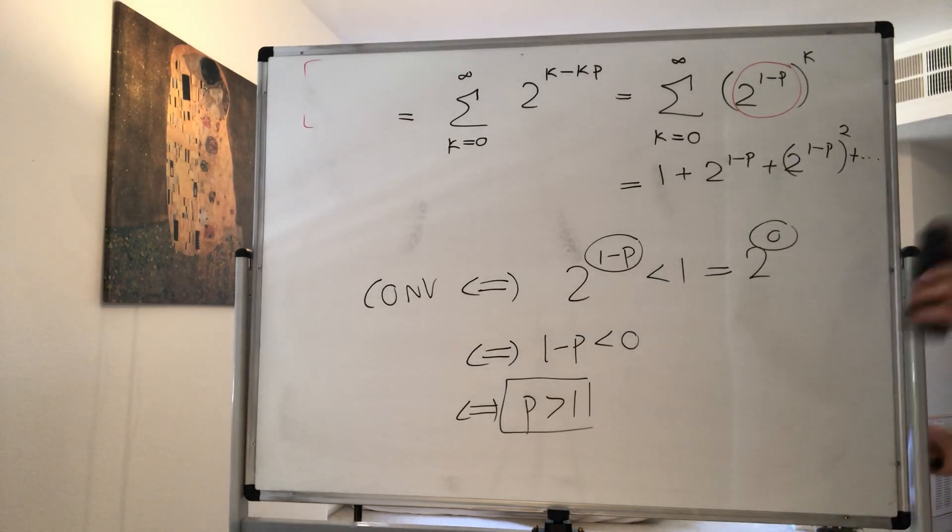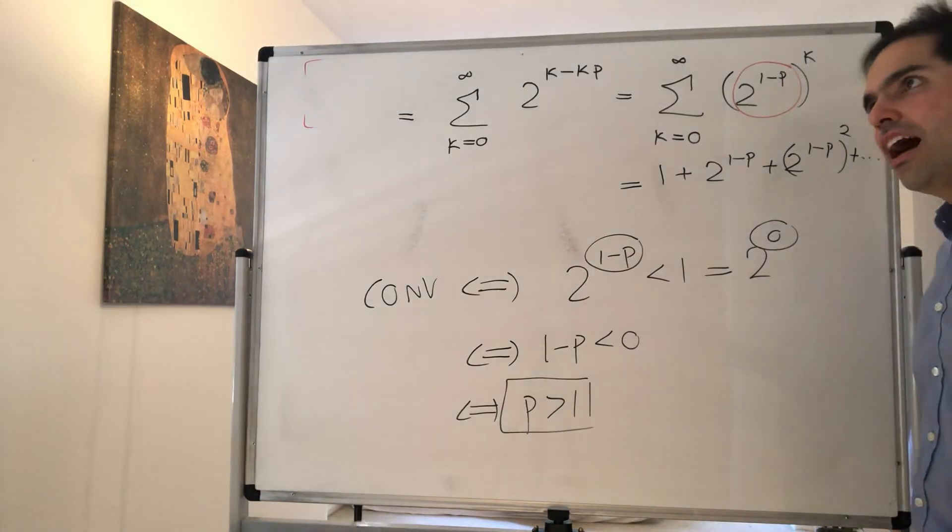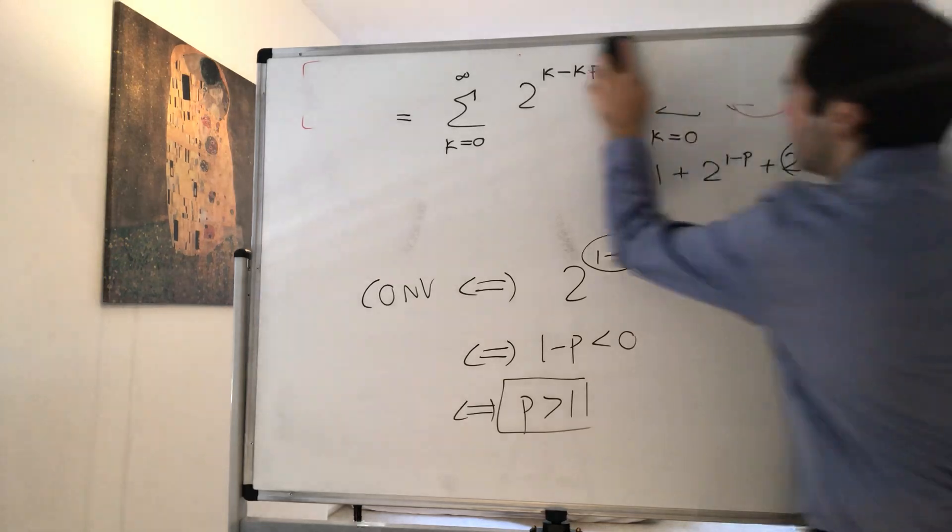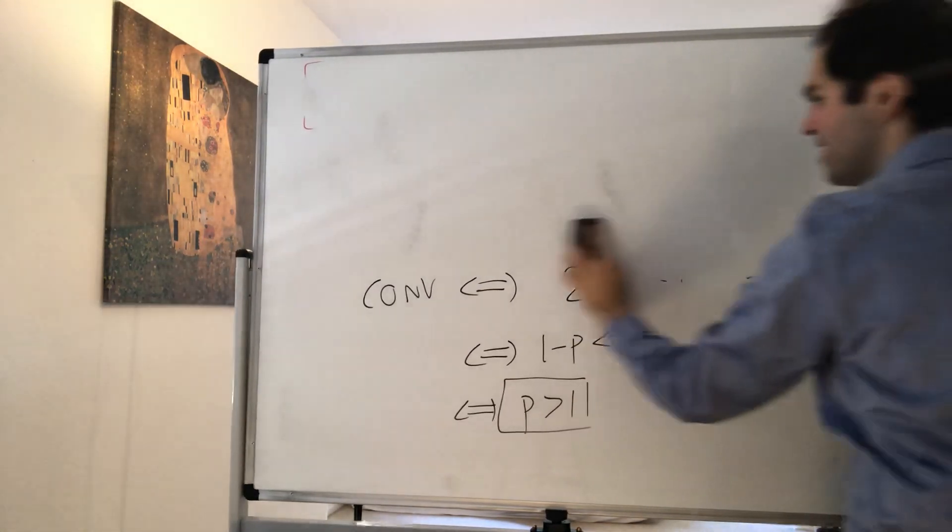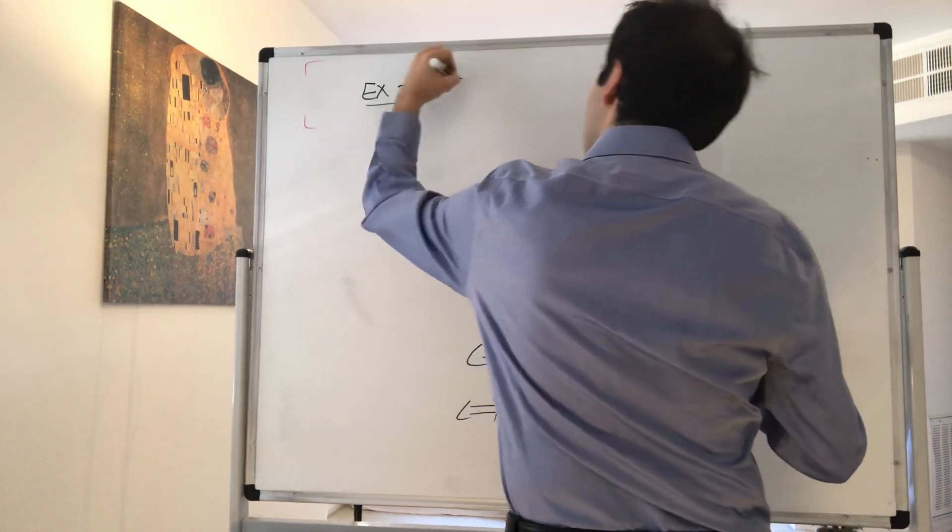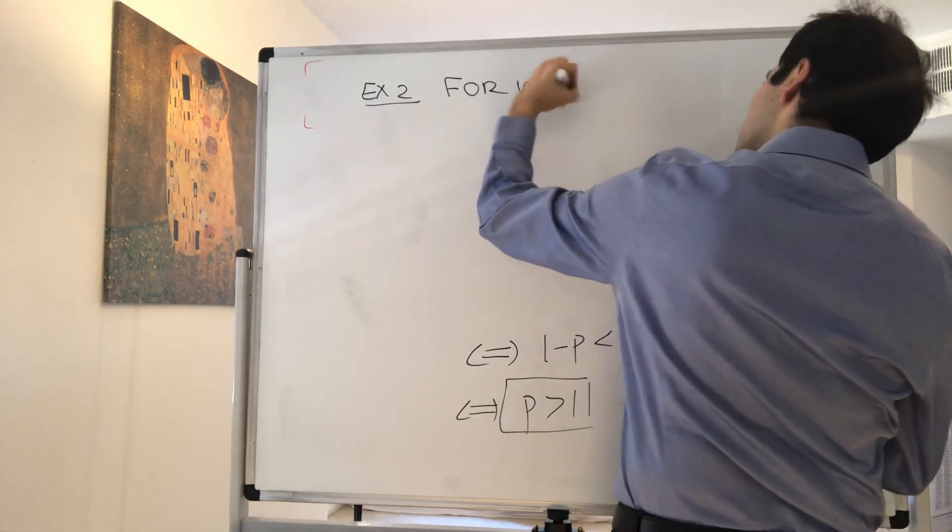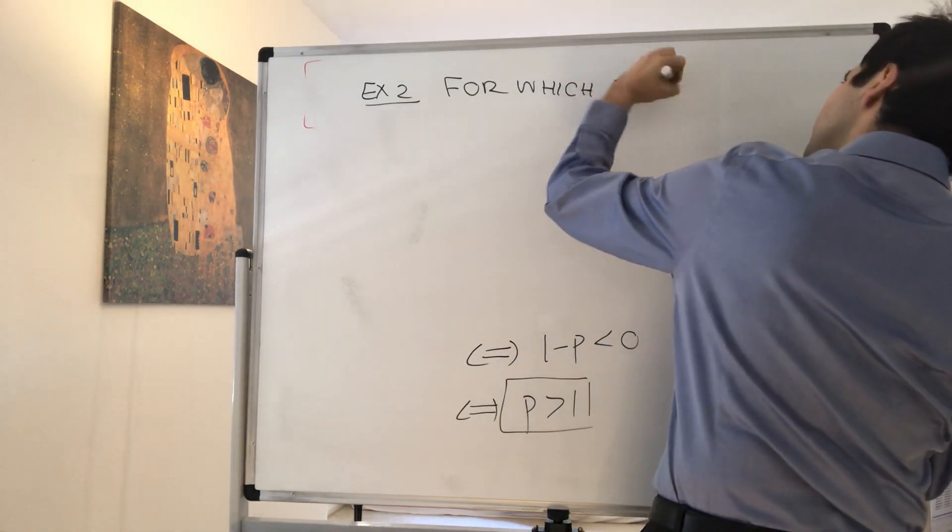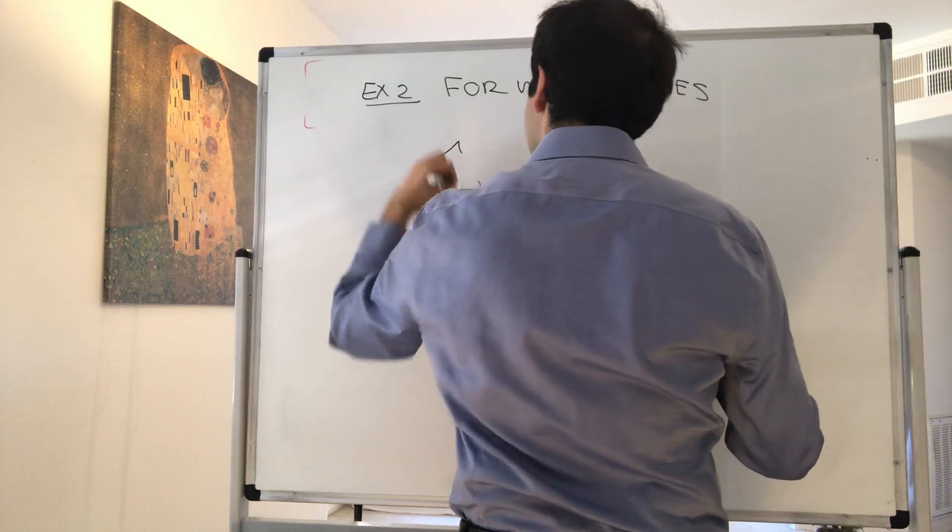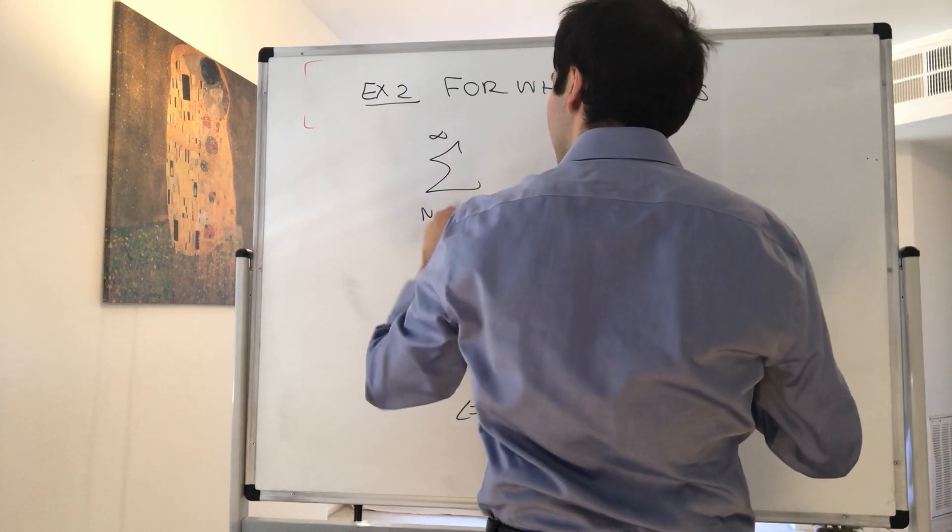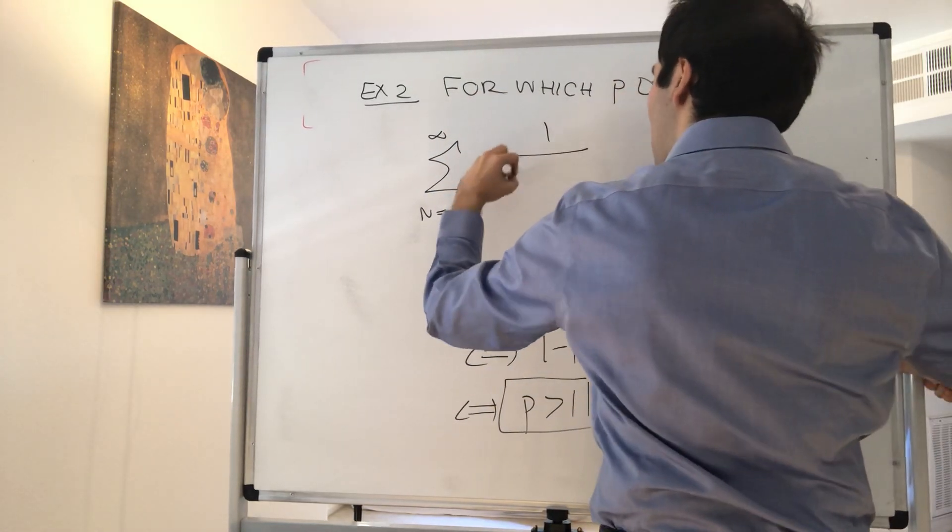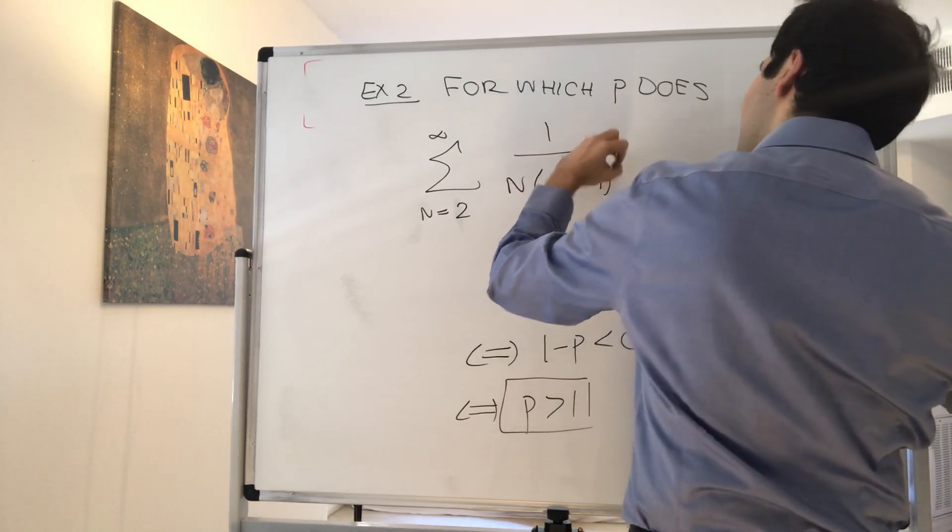And, as another application, let's do the same thing, but with n log n to the pth power. For, so here's a second example, for which p does the following thing converge? Does the sum from n equals 2 to infinity of 1 over (n times ln(n)^p) converge?